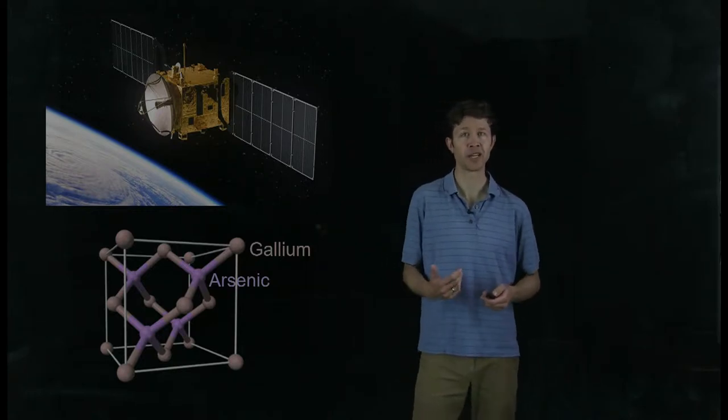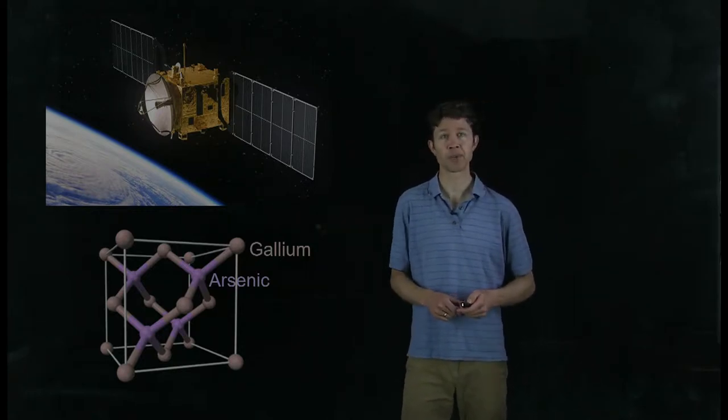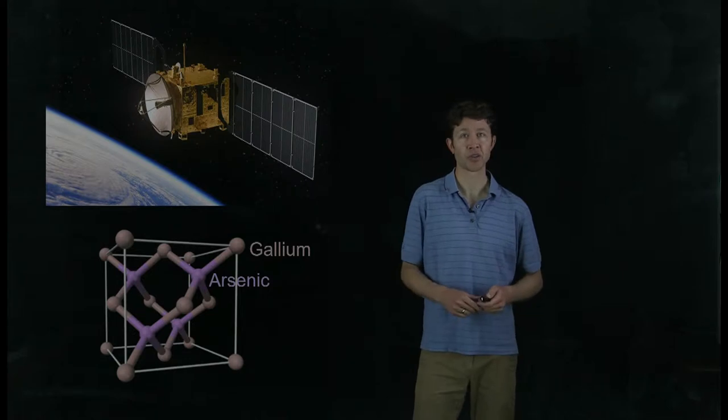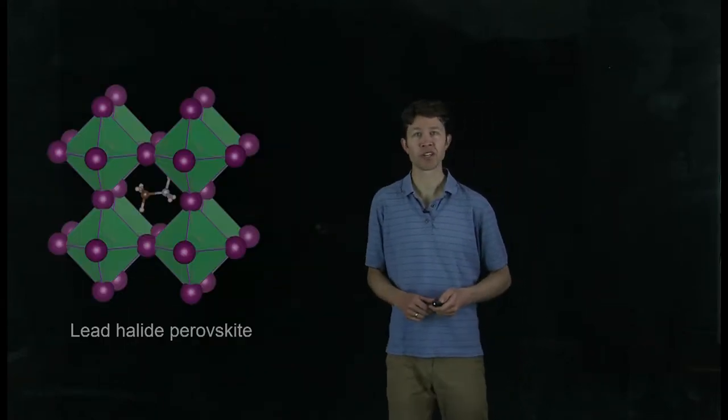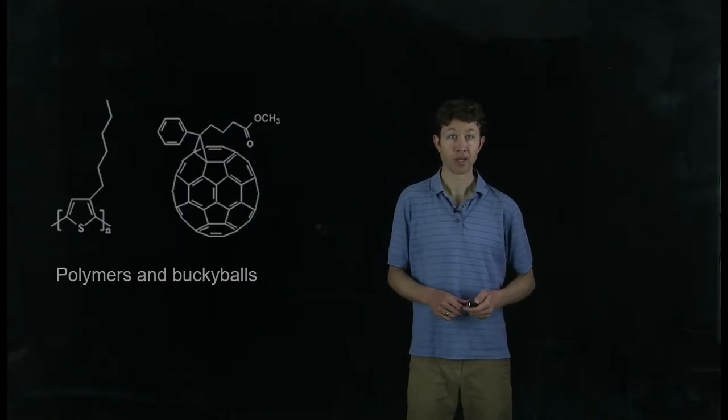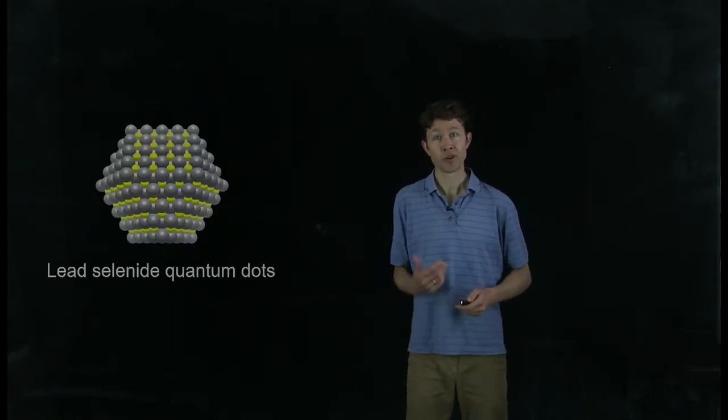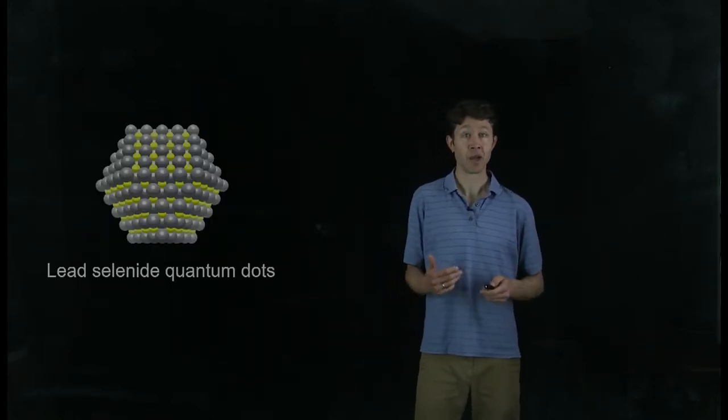Gallium arsenide is a great example. You'll find that on most of the satellites up in space. It makes a lighter weight solar cell with a higher efficiency, but it's more expensive. You can also make great solar cells out of perovskites, organic molecules, quantum dots, and many other materials.